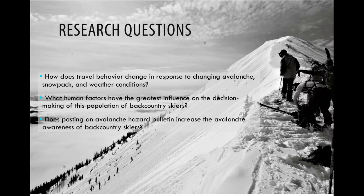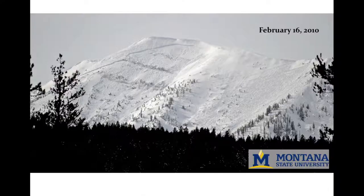We want to look at the human factors that Jerry talked about, like the heuristic traps that McCammon studied, and see whether or not we can pick out their prevalence by surveying backcountry skiers. We're also looking at whether putting a bulletin at the backcountry boundary informing skiers of the avalanche hazard has any influence on their decision-making and travel behavior.